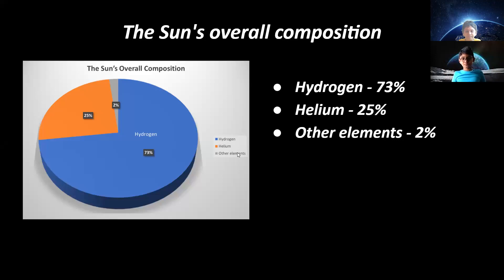The sun's overall composition. Hydrogen is 73%, helium is 25%, and 2% other elements.